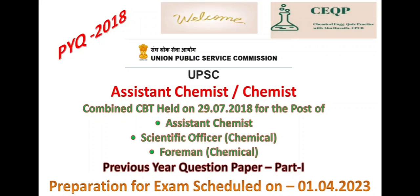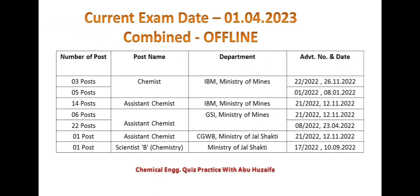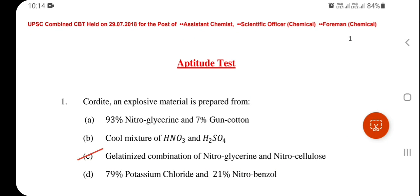It will be helpful for candidates who will appear for the exam scheduled on 1st April 2023 for various posts in different departments — chemist, assistant chemist in Indian Bureau of Mines, Ministry of Mines, assistant chemist in Central Groundwater Board, and scientist B in Ministry of Jal Shakti. This is the 2018 UPSC Combined CBT question paper for assistant chemist, scientific officer, and foreman.